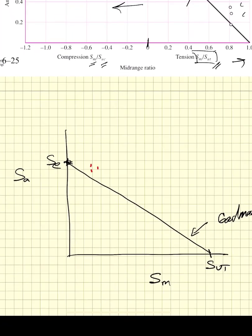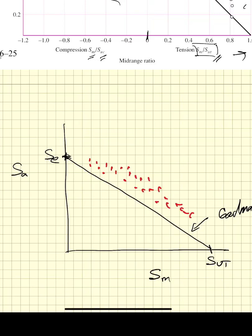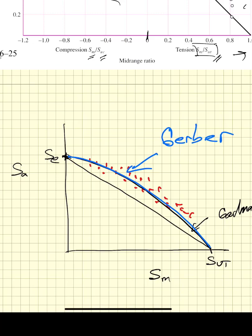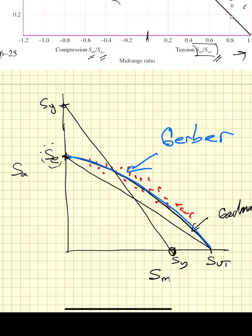A lot of the data lies above the Goodman line, so there was significant effort to modify mean stress correction factors. Gerber introduced a parabola — the Gerber mean stress correction — which is slightly different from the simple straight-line Goodman. People also considered including the yield strength: the endurance strength must be less than yield, and yield less than ultimate. Langer drew a yield line connecting the yield stress on the amplitude axis to the yield stress on the mean stress axis — the Langer line — which checks for yield failure on the first cycle.